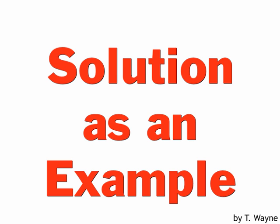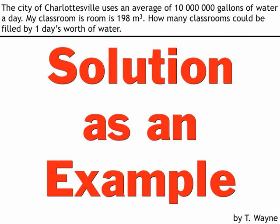This little video is going to show you a cool trick you can do with your conversion factors to make sure the units match. I'm going to use a solution to a problem as an example. Here's the problem: the city of Charlottesville uses an average of 10 million gallons of water a day. My classroom is 198 cubic meters in size. How many classrooms could be filled with this 10 million gallons — one day's worth of water?